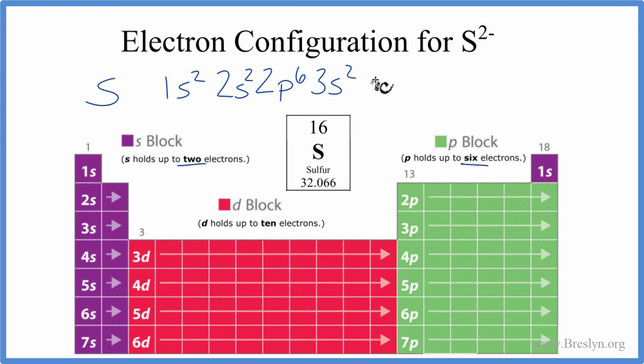So after 3s, we go to the 3p, and that can hold up to 6, but we don't need 6. We only need 4 more. So when we get these 4 here and add up all these electrons, it equals 16. This is the electron configuration just for neutral sulfur.